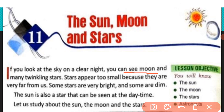Some stars appear so small because they are very far from us. Some stars are very bright and some are dim. Stars हमें size में बहुत small नजर आते हैं क्योंकि ये हमसे बहुत अधिक दूर हैं। हमारे Earth से बहुत अधिक दूर होने की वजह से हम इन्हें size में बहुत छोटा देख पाते हैं।